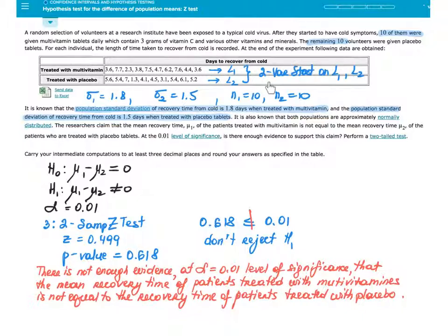As an alternative, in case you need to do this work manually, you could. I also note that the population standard deviation for the first group is 1.8, for the second group 1.5, and sample sizes are 10 in each case. The question is: is there enough evidence to conclude that μ₁, the mean recovery time of patients treated with multivitamin, is not equal to μ₂ of patients treated with placebo tablets?